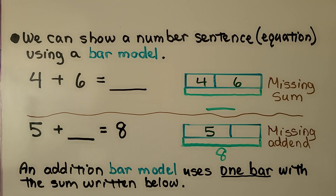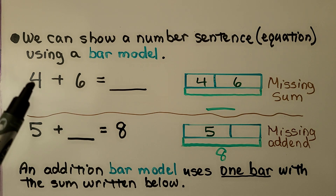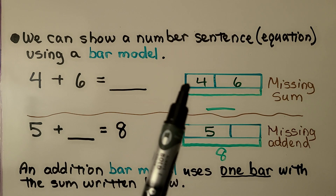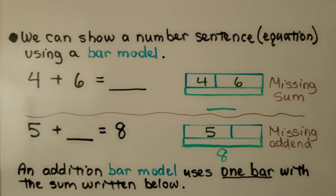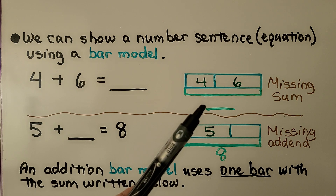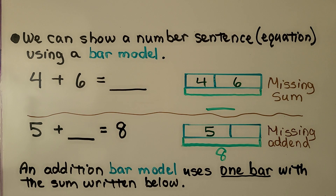We can show a number sentence — that's an equation — using a bar model. Here we have 4 plus 6; it's addition, so we use one long bar with a missing sum. We can see the addends, 4 plus 6, and we're missing the sum. Do you know what the answer is? If you said 10, you're right.